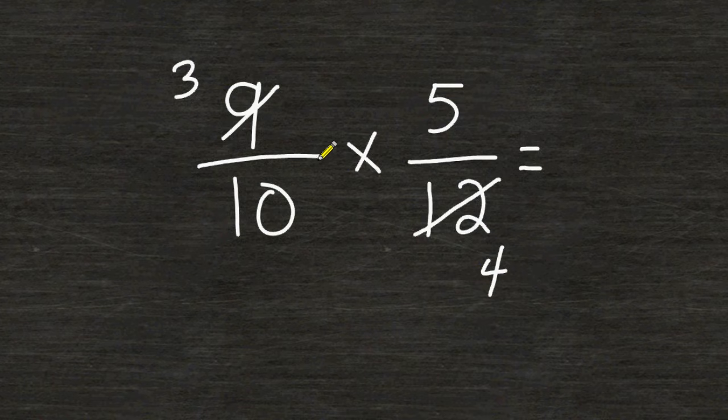You can kind of visualize 9 over 12 as if it were its own fraction and reduce 9/12 to lowest terms which is 3/4. Now we can do the same thing with 5/10. We can visualize 5 over 10 as being the fraction 1/2, and the reason we would reduce 5 over 10 to 1/2 is because they both share the common factor of 5. 5 can be divided into itself once and 5 can be divided into 10 twice.